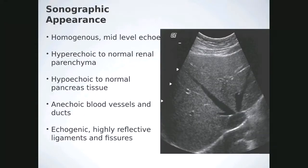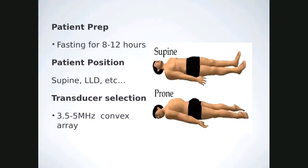Sonographically, the liver is homogeneous with medium-level echoes. It appears hyperechoic to normal renal parenchyma and hypoechoic to normal pancreas tissue. You'll see anechoic blood vessels and ducts, and echogenic ligaments and fissures. Patient prep is fasting — minimum 8 hours. Patient position is supine or decubitus, documenting position on films. For an average-sized patient, use a 3.5 or 5 megahertz convex array transducer.